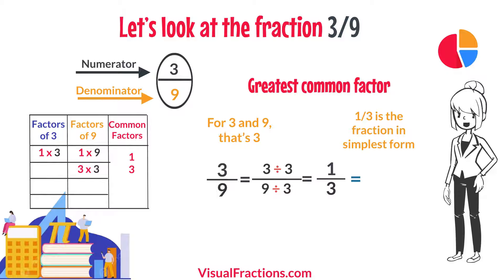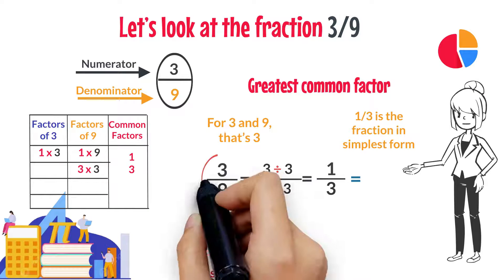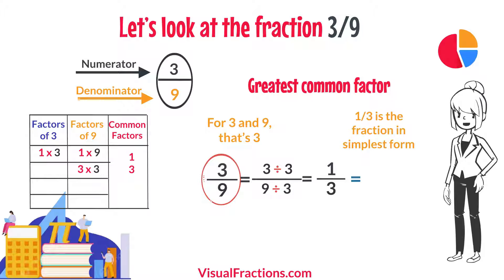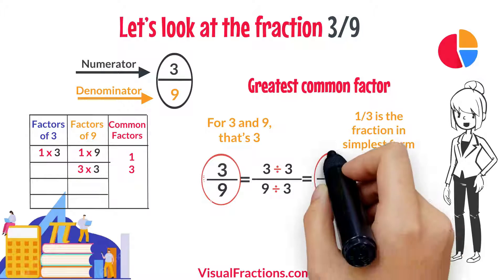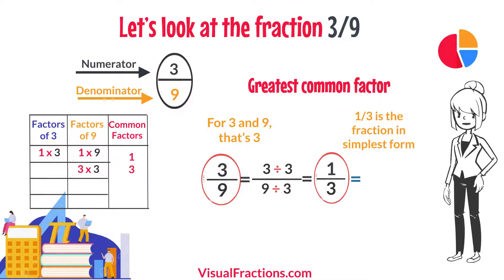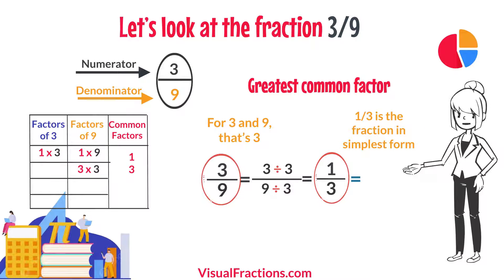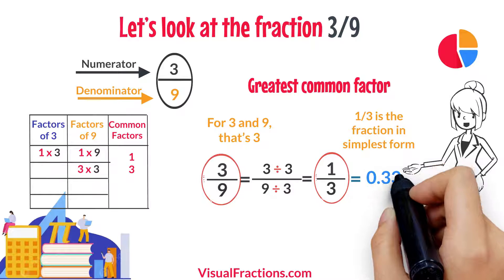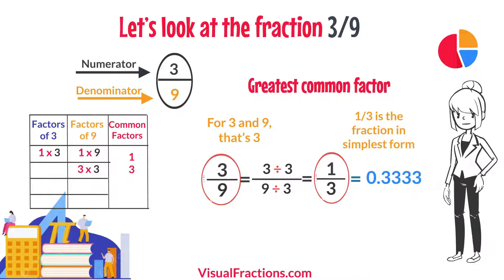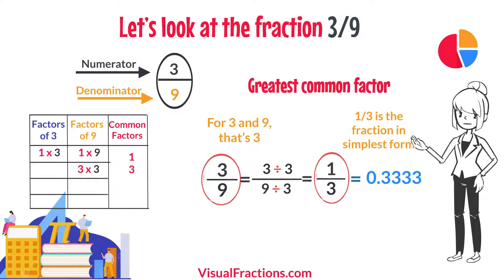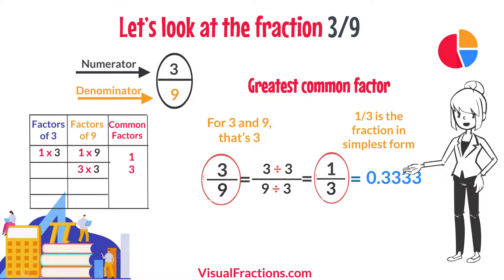It's important to note that both the original fraction 3 ninths and the simplified fraction 1 third have the same decimal value, which is approximately 0.3333. This shows that although their appearance may change, their value remains consistent.